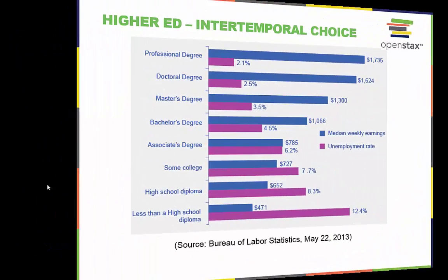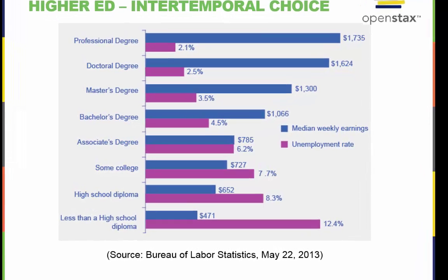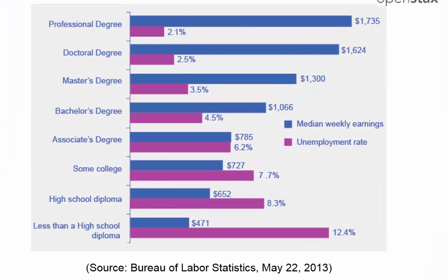So why do people increase their consumption of higher education and training during an economic downturn, when most other products and services are consumed at a lower rate? We see in this graph that this choice can pay off in the future. Those with the highest degrees in 2012 had substantially lower unemployment rates, whereas those with the least formal education suffered from the highest unemployment rates. The national median average weekly income was $815, and the national unemployment average in 2012 was 6.8 percent.